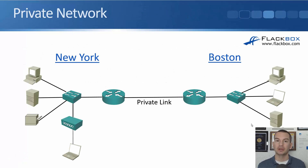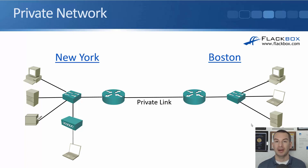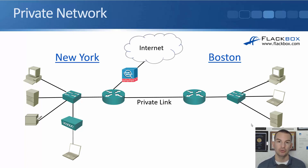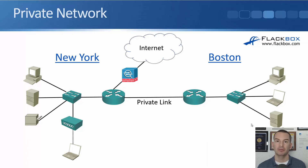Looking at the example here, we've got a company with an office in New York and an office in Boston, and they put in a physical link between New York and Boston which is dedicated just for traffic between those two offices. They're also going to want internet connectivity, so we could put in an internet link from New York. Boston users could send their internet traffic over the private link to New York and then break out to the internet from there.